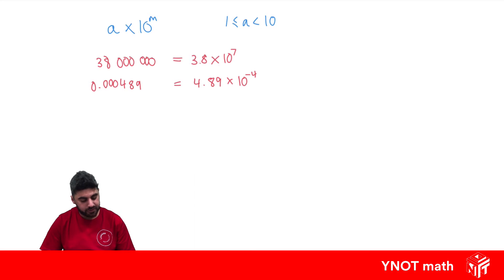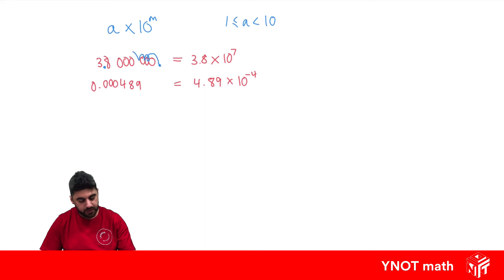In this first example, the decimal place was at the end and we want to move it here after the 3. We count how many jumps over the digits we have to make: 1, 2, 3, 4, 5, 6, 7 — and that's why our scientific notation number ends up being to the power of 7.